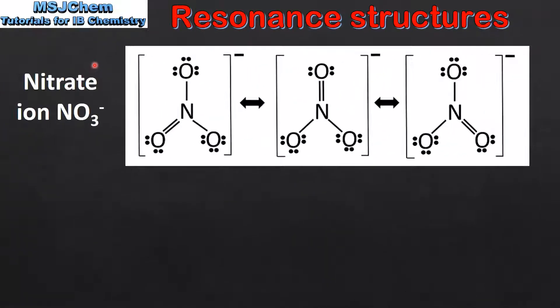Next we'll have a look at more examples of resonance structures, starting with the nitrate ion. The nitrate ion has three possible resonance structures, each with the double bond in a different position.